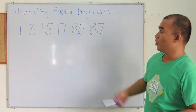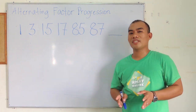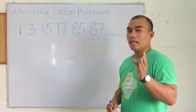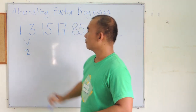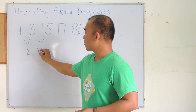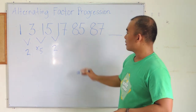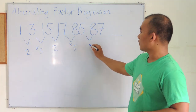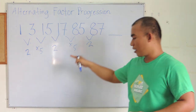We have an alternative factor series. In an alternative factor series, two or more common factors, differences, or patterns are alternately applied to the terms to determine the next number. For example, from 1 to 3 the difference is plus 2; 3 to 15 is times 5; 15 to 17 is plus 2; 17 to 85 is times 5; 85 plus 2 equals 87. To determine the answer, 87 times 5 equals 435.